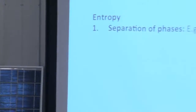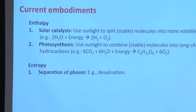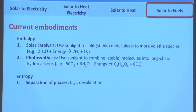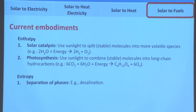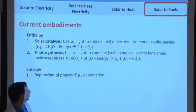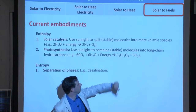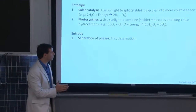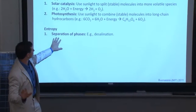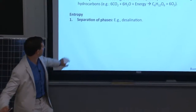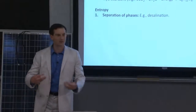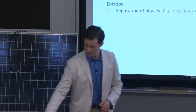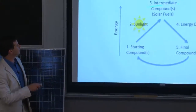Lastly, solar to fuels. I've traditionally broken it down into enthalpy and entropy in the sense that with enthalpy, you're storing sunlight in chemical bonds — more complex, higher energy molecules are being created. You can take water and split it into hydrogen and oxygen gases, or take CO2 and water and convert them into hydrocarbons. Those can be used to store fuel and ultimately release it by burning — a closed-loop cycle. What I refer to as entropy is the separation of phases: desalination, where you separate salts from water, increasing the energy of the system through physical separation. That is a form of energy storage.